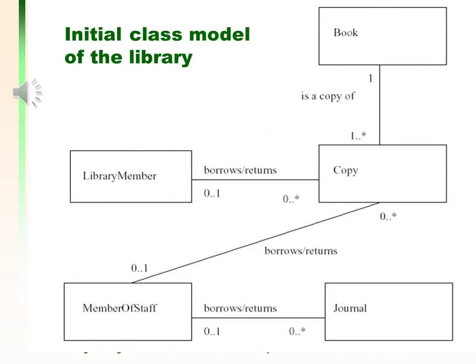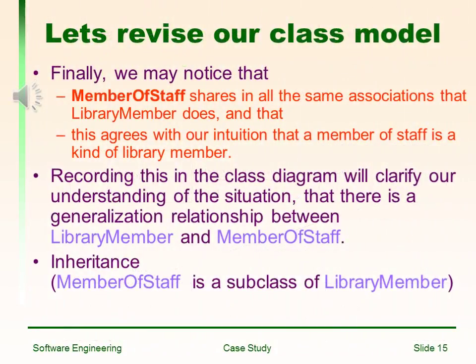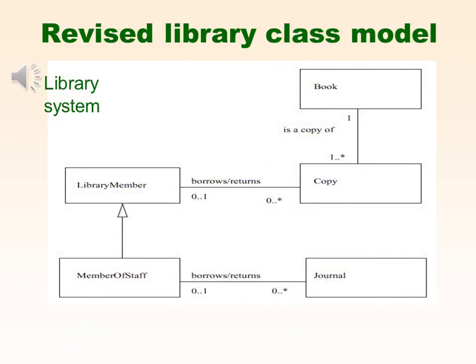That will be the initial class model of the library. Let's revise our class model. Finally, we may note that members of staff share all the same associations that the library member does, and that this agrees with our intuition that a member of staff is a kind of library member. Recording this in a class diagram will clarify our understanding of the situation: there is a generalization relationship between the library member and member of staff. Inheritance: member of staff is a subclass of library member.